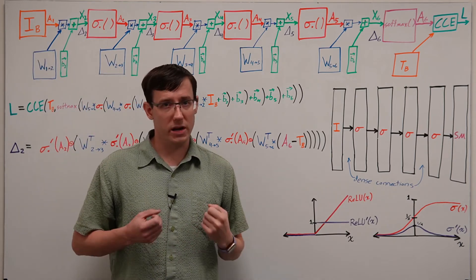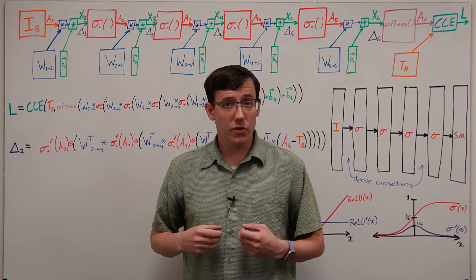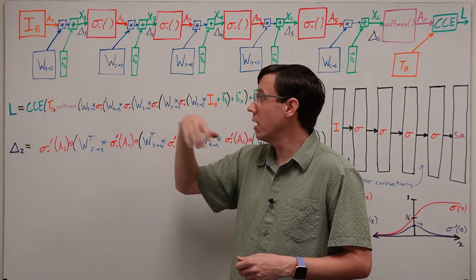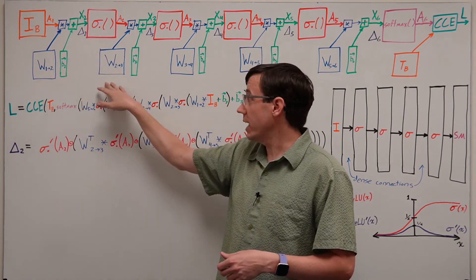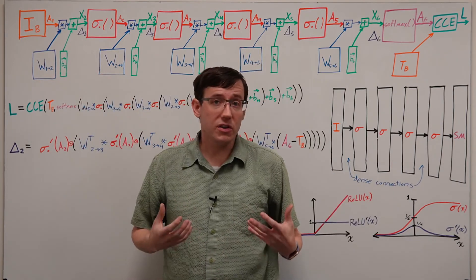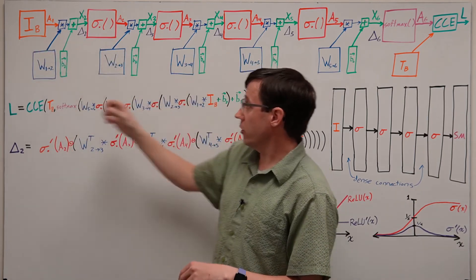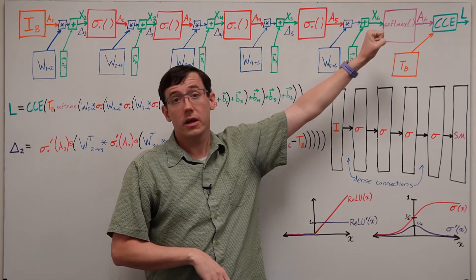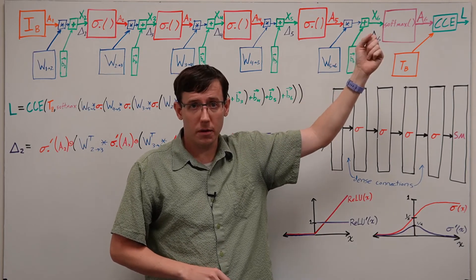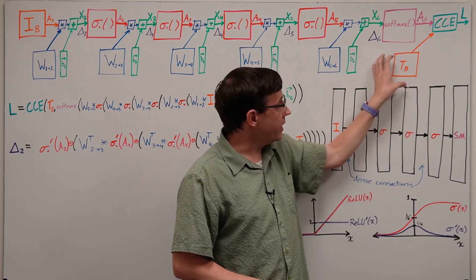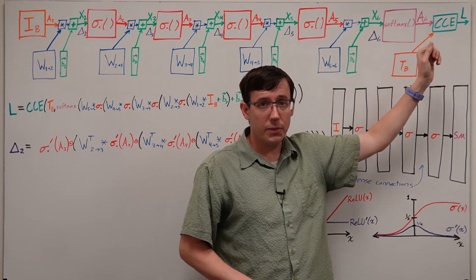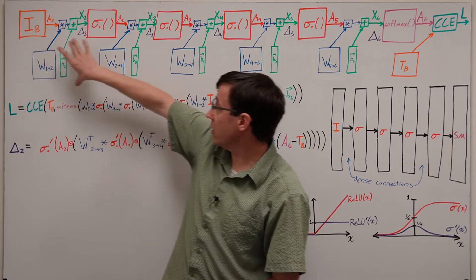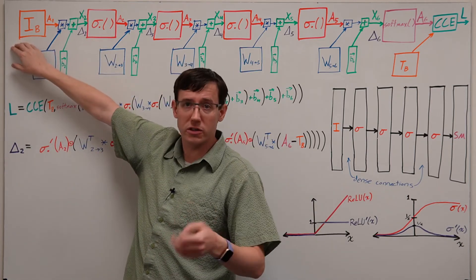The reason vanishing gradients are a problem is that when we start training a neural network, it's computing a completely random function because we have chosen random initial values for the weight matrices. And because a deep neural network applies many random weight matrices to the inputs, by the time data gets to the end of the network it has been pretty thoroughly scrambled. And so the information that we get from the loss function computed on the targets has to propagate back through the network, and it's particularly important to update the weights for these early layers that are being applied most directly to the input.